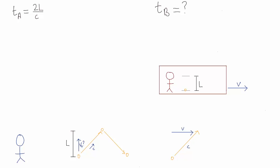And then, just from the Pythagorean theorem, the vertical motion is the square root of c squared minus v squared.